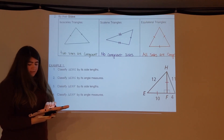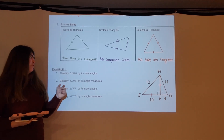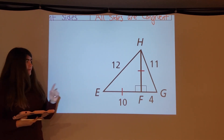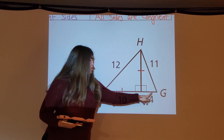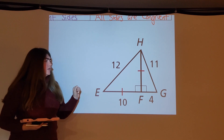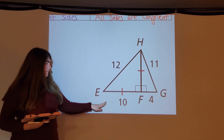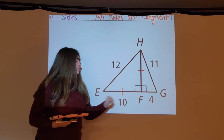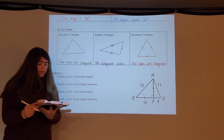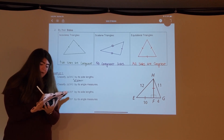Let's take a look at an example where we classify triangles by side lengths and angle measures. For triangle EHG classified by side lengths: I have sides of 12 and 11, which aren't the same. The third side is 10 plus 4, which equals 14 — not equal to 12 or 11. So triangle EHG must be a scalene triangle, because no side lengths are the same.